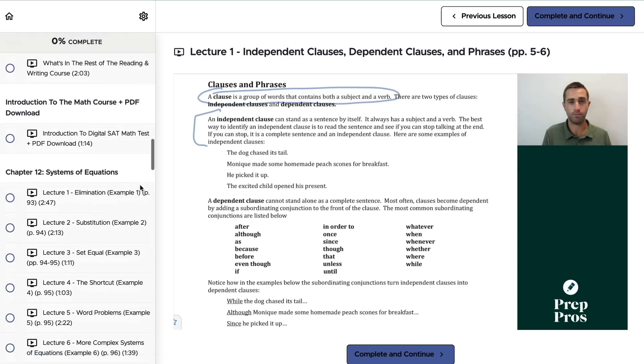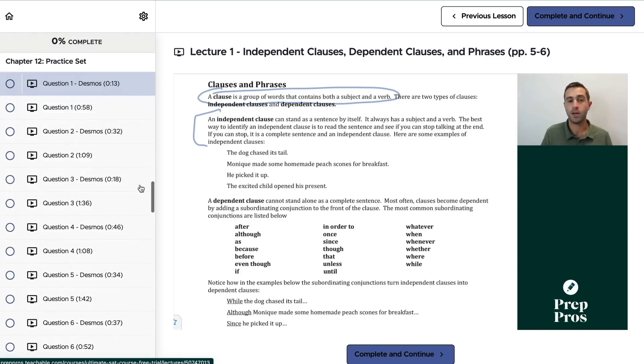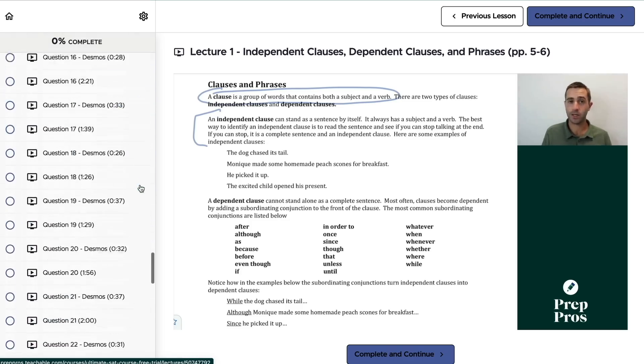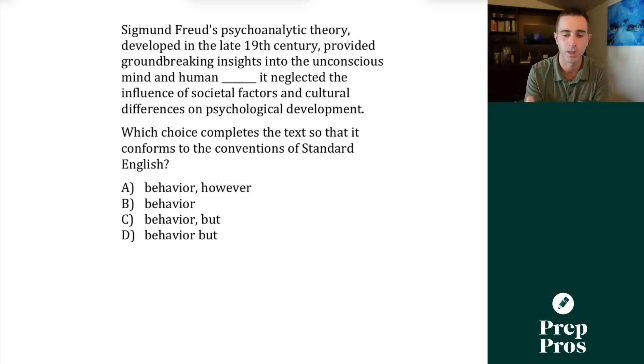So first thing we just want to do here is we always want to check our clauses before and after this breaking point. Sigmund Freud's psychoanalytic theory developed in the late 19th century provided groundbreaking insights into the unconscious mind and human behavior. Well, that's independent clause, full sentence. It neglected the influences of societal factors and cultural differences on psychological development. That's also an independent clause. Since we have two independent clauses, this means we need period, semicolon, comma, fanboys. Only C gives us one of those options, and that's how we can see that C is correct.